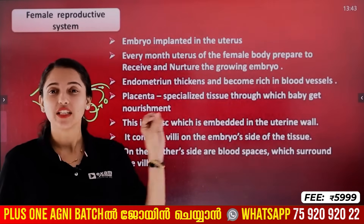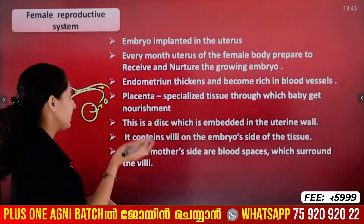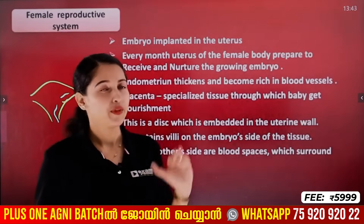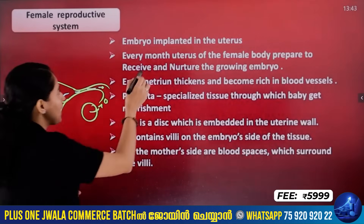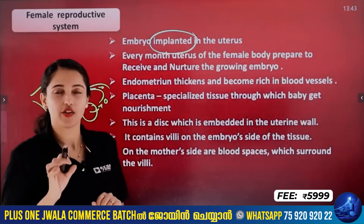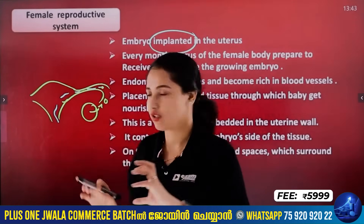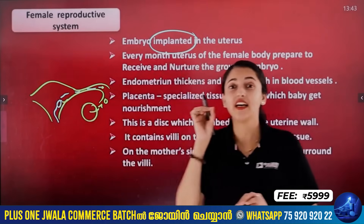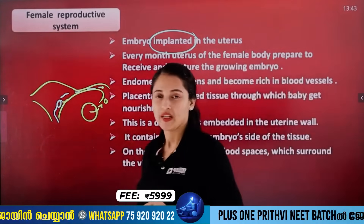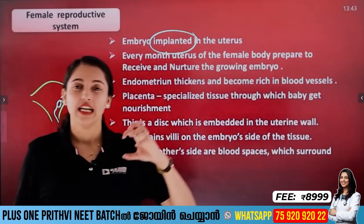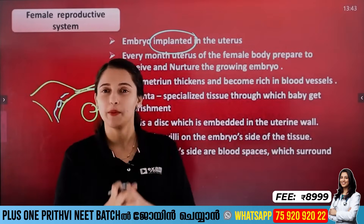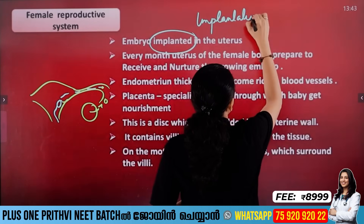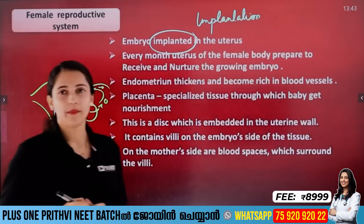The sperm and egg have to travel towards the uterus, and then they are implanted in the uterus — in the inner wall, that is the endometrium. The embryo is attached to the endometrium. This process is called implantation.